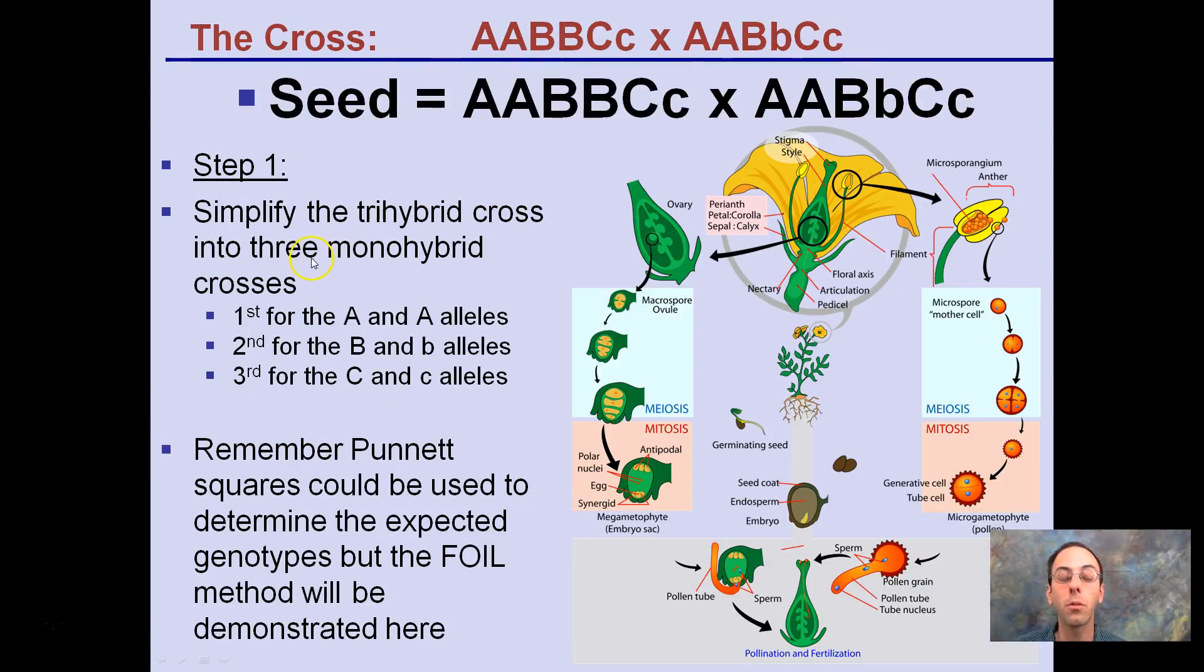So step one: identifying the trihybrid cross into three monohybrid crosses, one for the A alleles, one for the B alleles, one for the C alleles. Remember, we're going to use the FOIL method and not Punnett squares to generate this. Looking at plants, we're looking at generating the genotype for seeds.